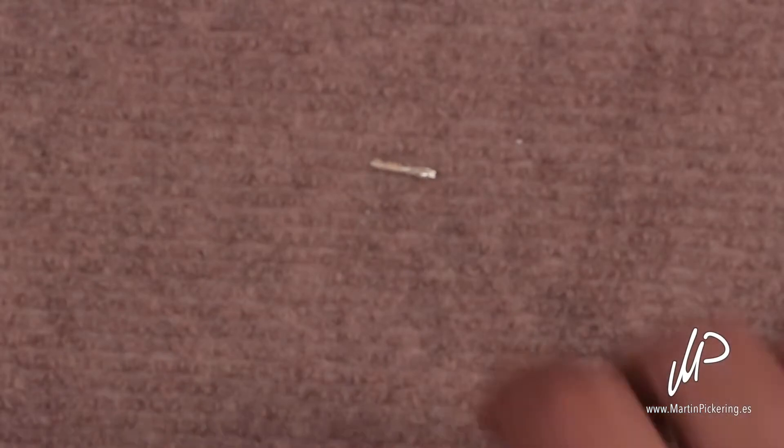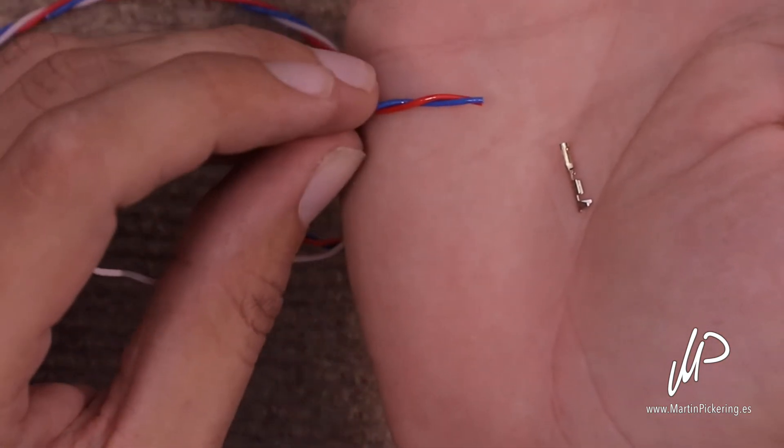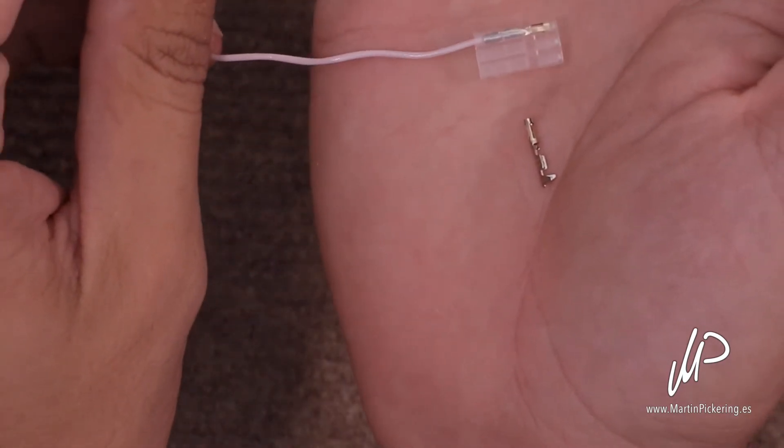Okay, so the idea is with our little crimping piece, put it onto the end of the wire so we can finish off the connector.